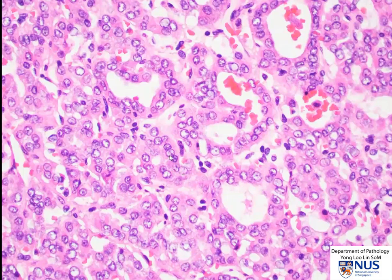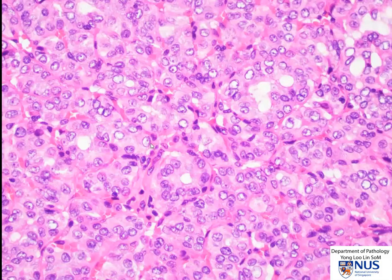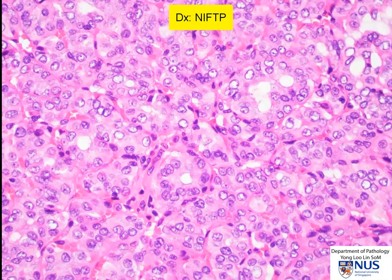Here is a higher magnification view to show the nuclear features that are very similar to papillary thyroid carcinoma. We have nuclear ovality, nuclear grooves, small nucleoli, and fine powdery chromatin. The final histologic diagnosis here is NIFT-P — a very well-circumscribed, partially encapsulated tumor with no evidence of invasion into the thyroid parenchyma, overwhelmingly follicular in architecture, exhibiting the nuclear features of papillary thyroid carcinoma.